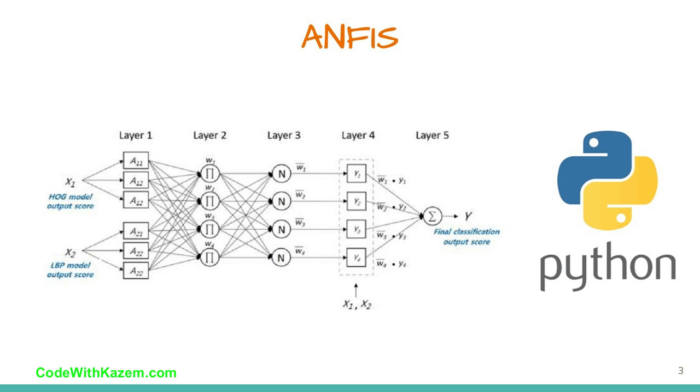An adaptive neuro fuzzy inference system or adaptive network based fuzzy inference system, ANFIS, is a kind of artificial neural network that is based on Takagi-Sugeno fuzzy inference system. It integrates both neural networks and fuzzy logic principles. It has the learning capability to approximate non-linear functions.